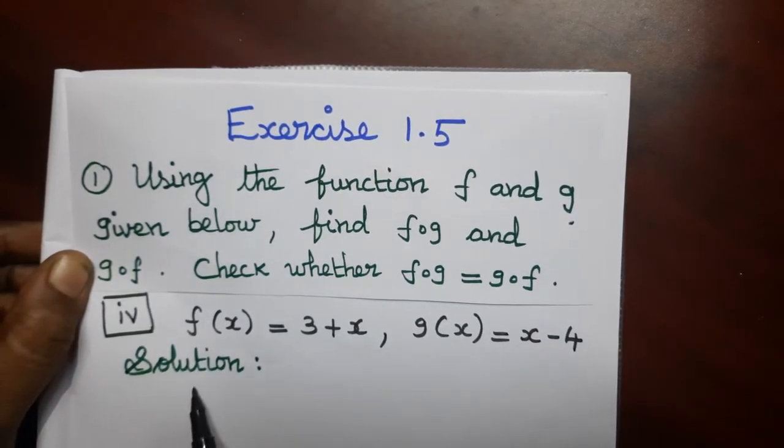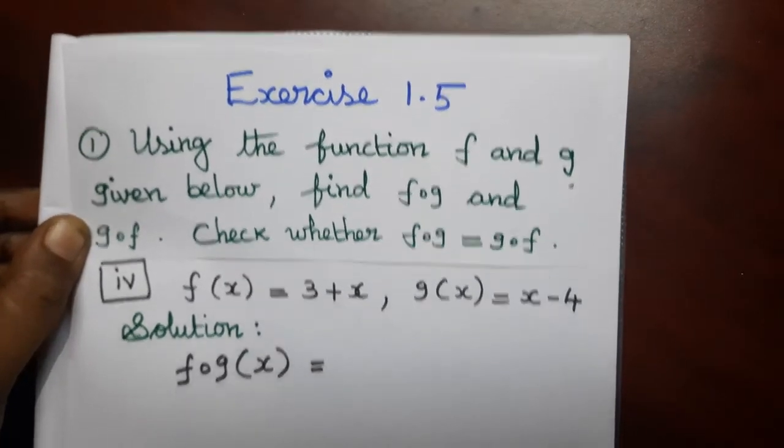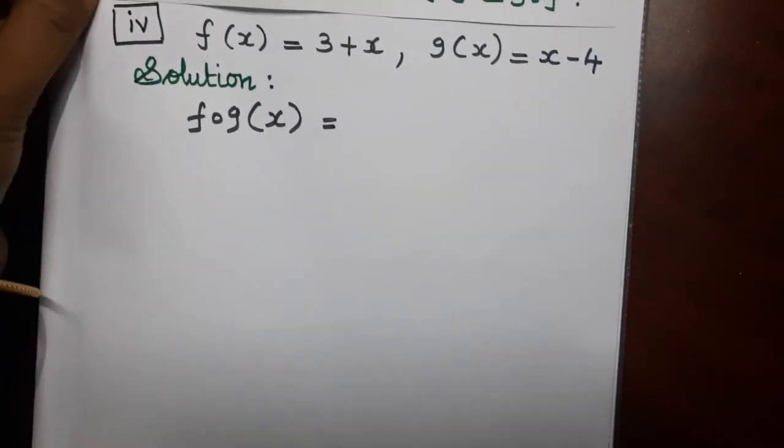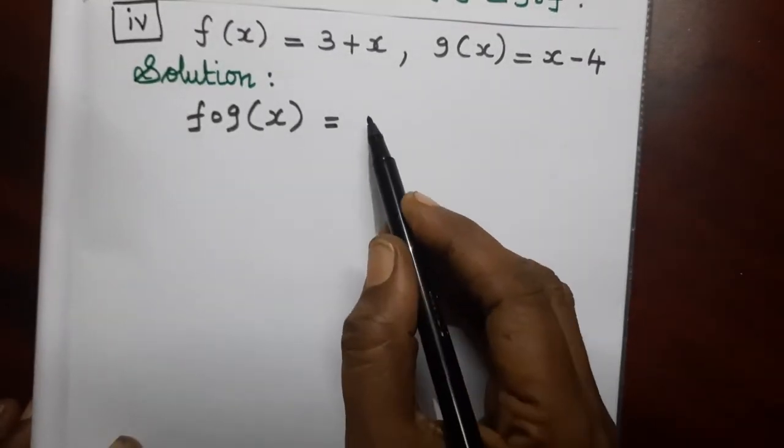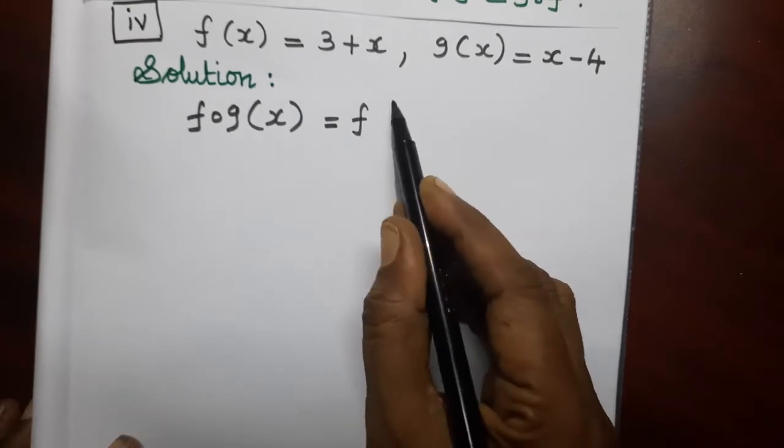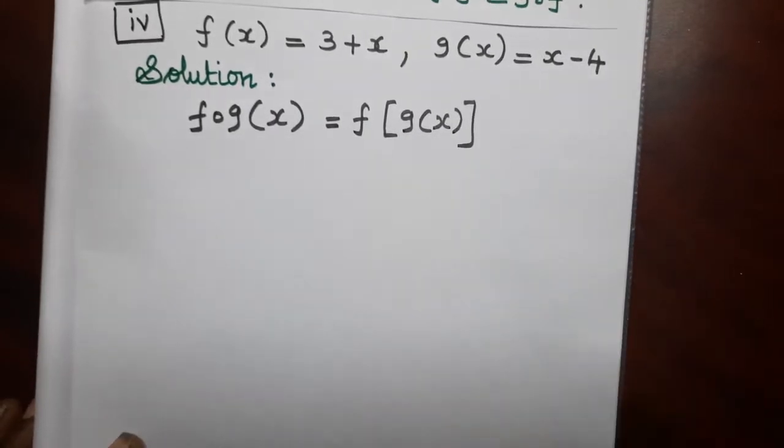If we want the first one, f dot g of x. First we need to find f dot g of x. The formula is f of g of x.